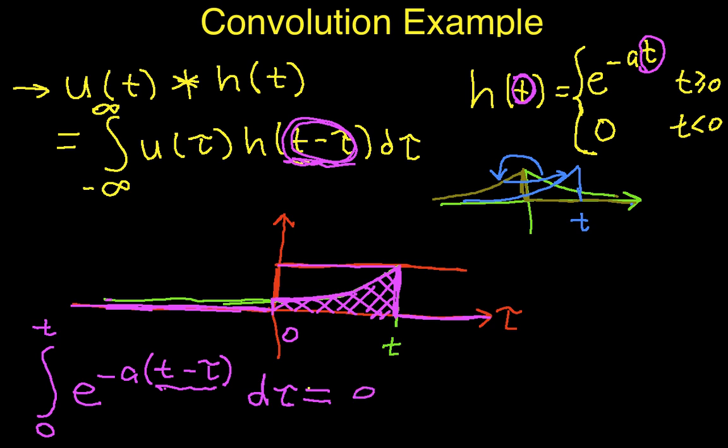So I can write this as e to the minus a t integral from zero to t, e to the a tau, because the negative a times the negative tau gives me a positive a tau d tau. And I can work out this integral.